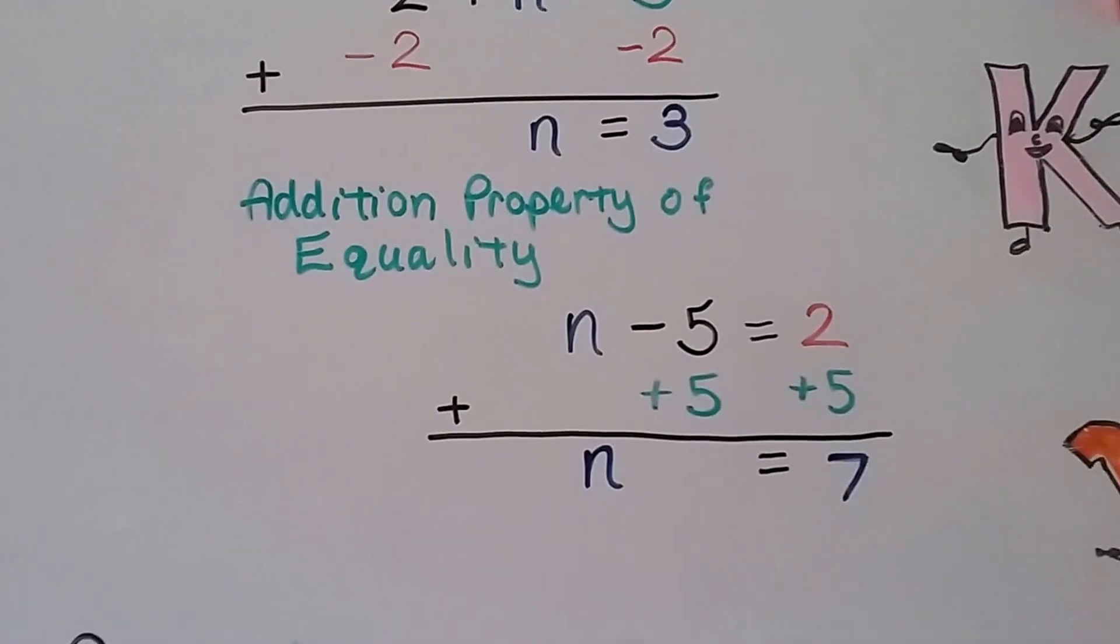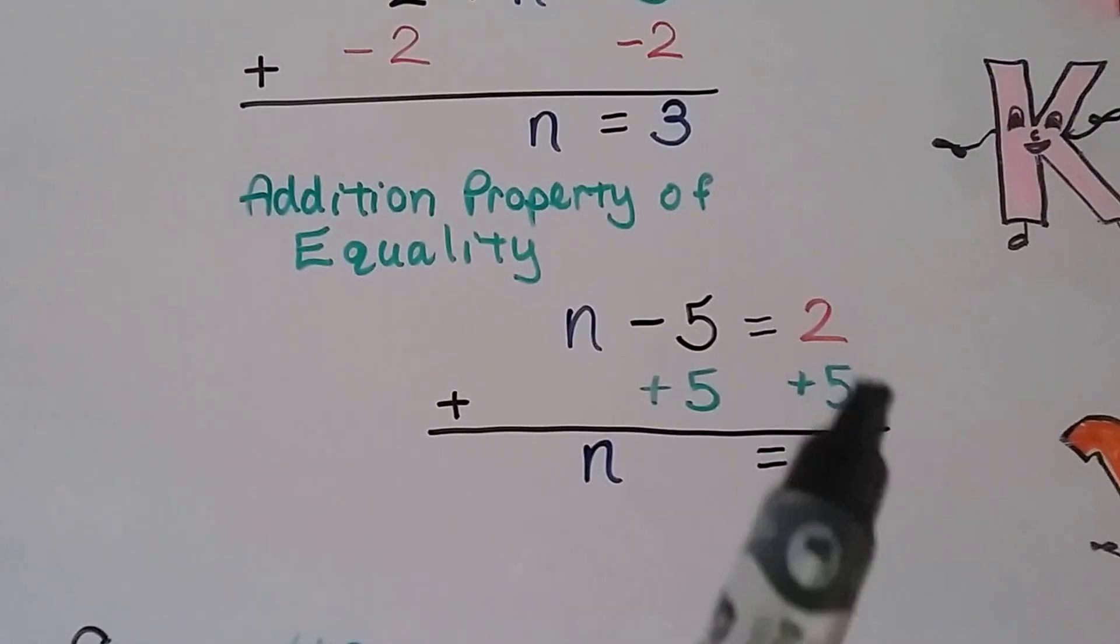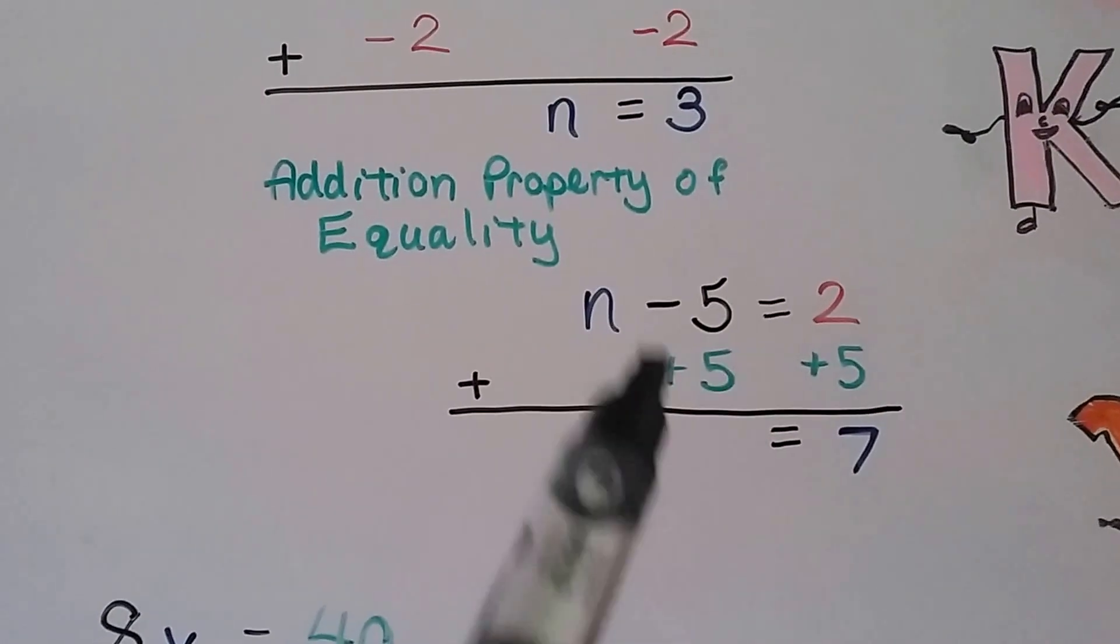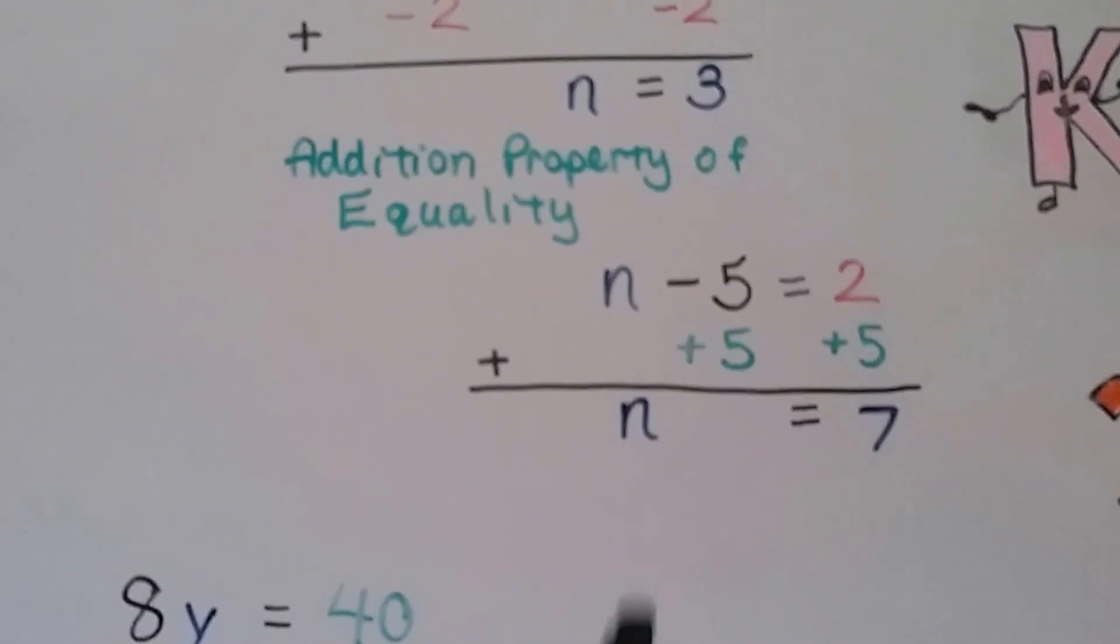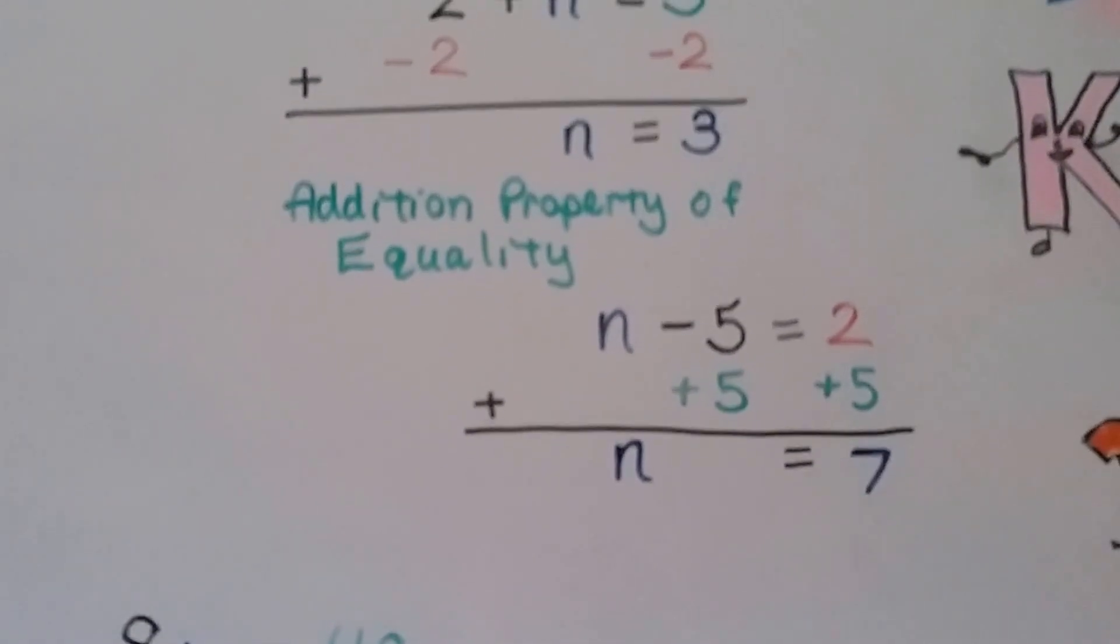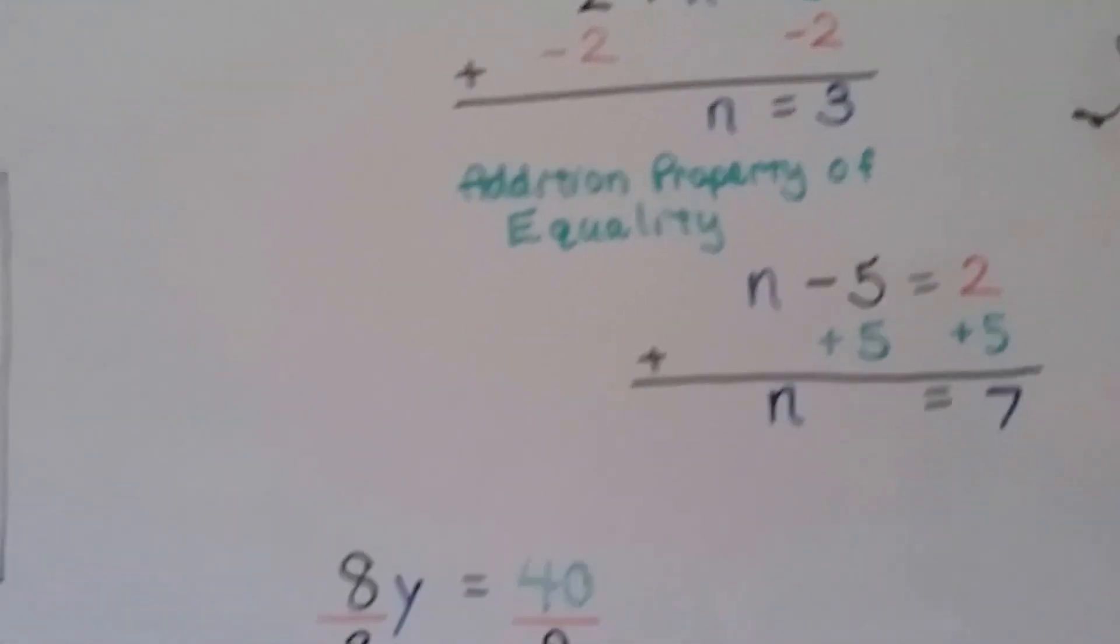And if we have n minus 5 equals 2, we add a positive 5 to each side to get rid of this and eliminate it and get the n by itself. So we have n equals 7. See?